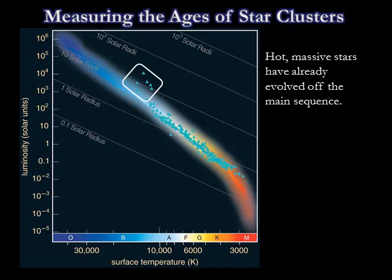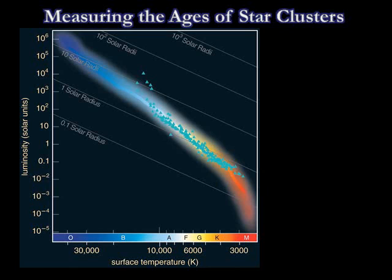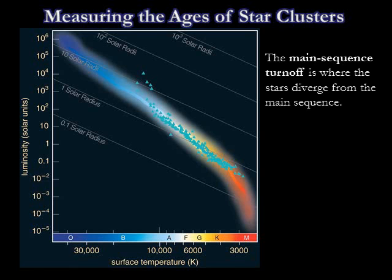The Pleiades cluster is old enough for its main sequence O stars to have already ended their hydrogen-fusing lives, but young enough that some of its stars of spectral type B still reside on the hydrogen-fusing main sequence. The precise point on the HR diagram at which a cluster of stars diverges from the main sequence is called the main sequence turnoff point. For the Pleiades, it occurs around spectral type B6.